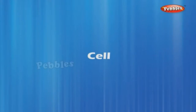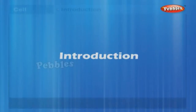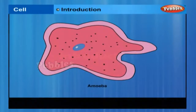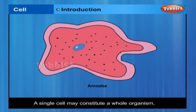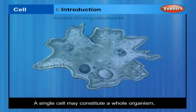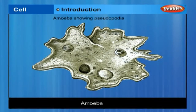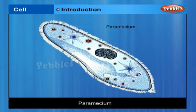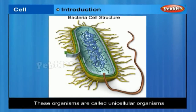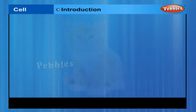Cell Introduction. It is now known that a single cell may constitute a whole organism, as in amoeba, paramecium and bacteria. These organisms are called unicellular organisms, uni meaning single.